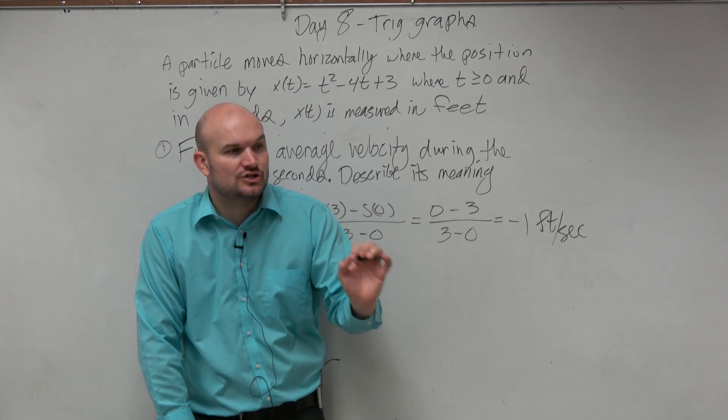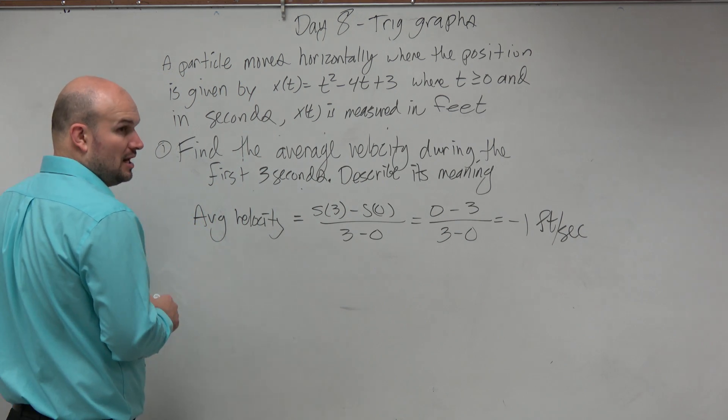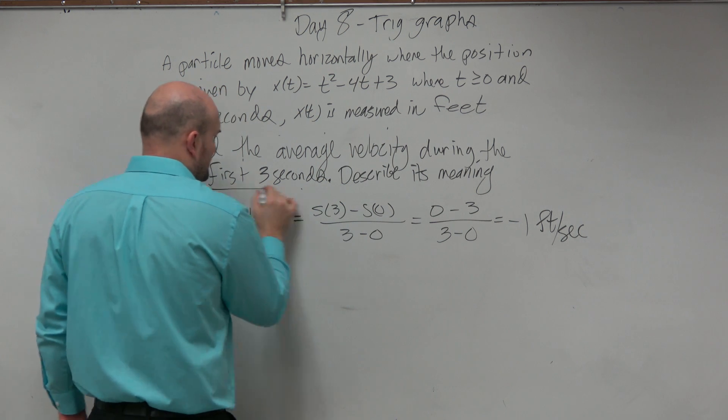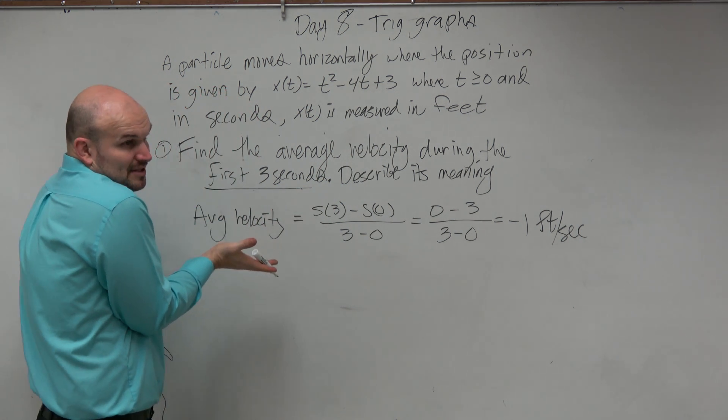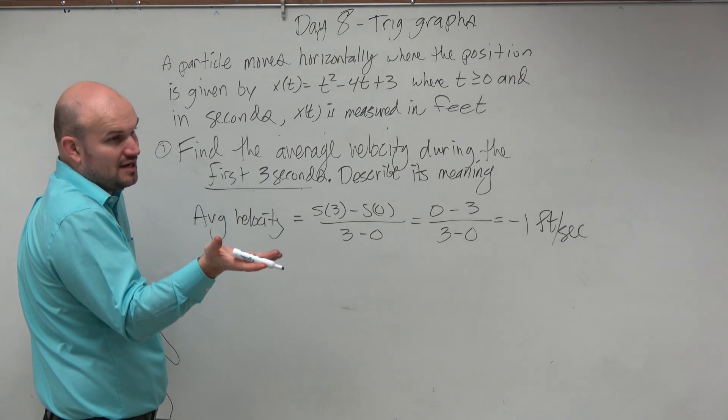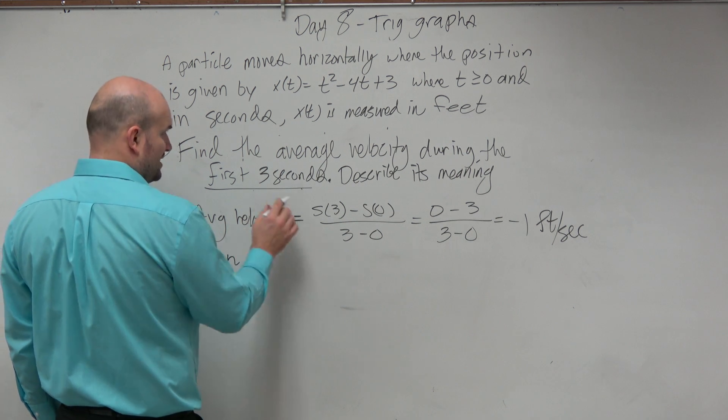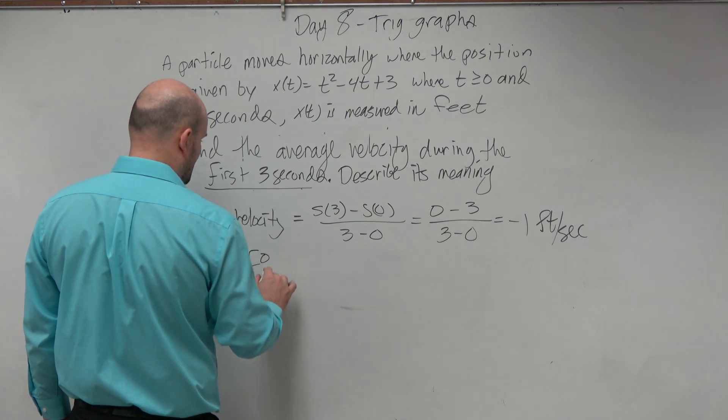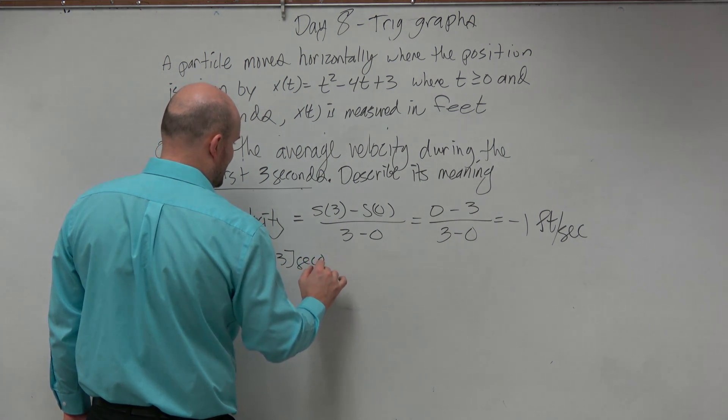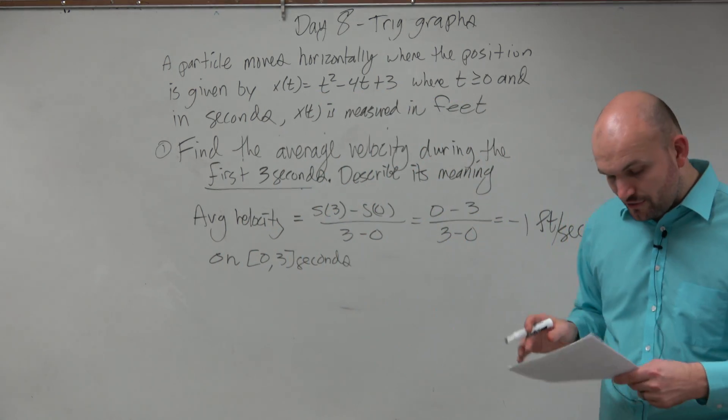And then to be even more specific, we can say on the time interval. So we can say—no, we want to make sure that we're talking about the interval that the problem is referring to. Because do we know what's happening at 4 seconds? So if you say 'on the interval,' what interval are you talking about? It's very vague. So on—we could say here, 0 to 3. Just don't write 'an interval.' Make sure you define that interval. On the interval from 0 to 3,